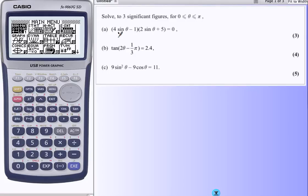First one, we've got two brackets multiplying to give zero. Two options here, either this bracket's zero, or this bracket's zero.